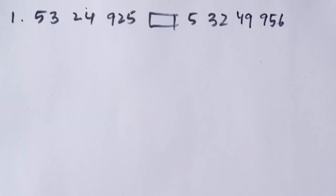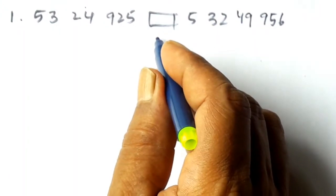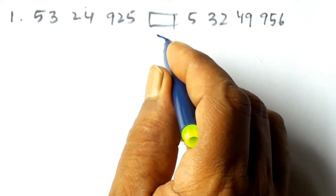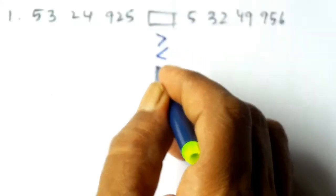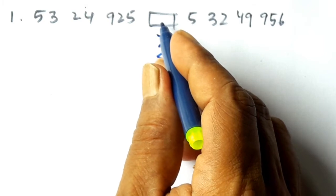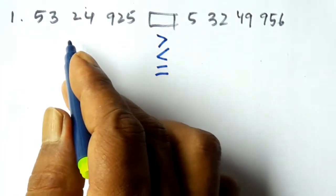Now, the question says: insert less than, greater than, or equal to in the box. We write greater than, less than, or equal to. To compare two numbers, first we count the number of digits.